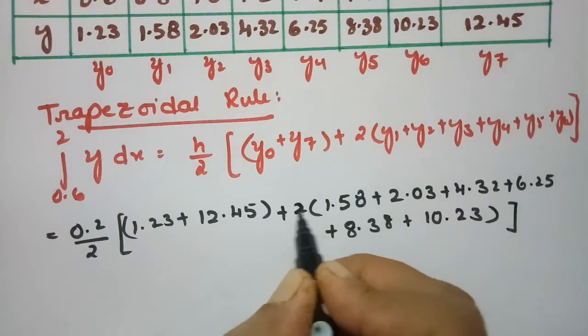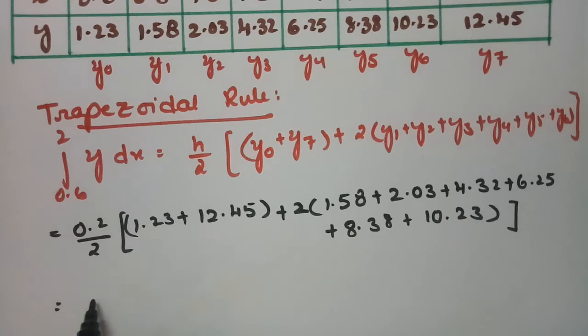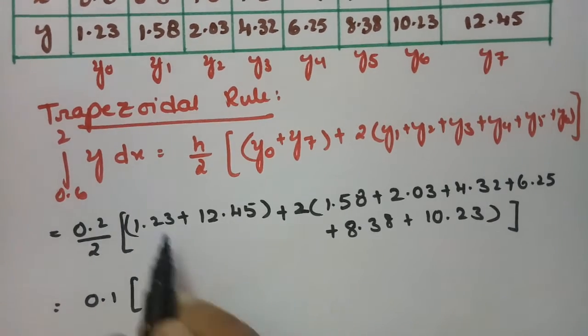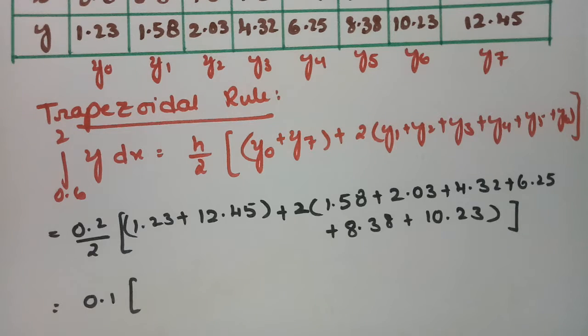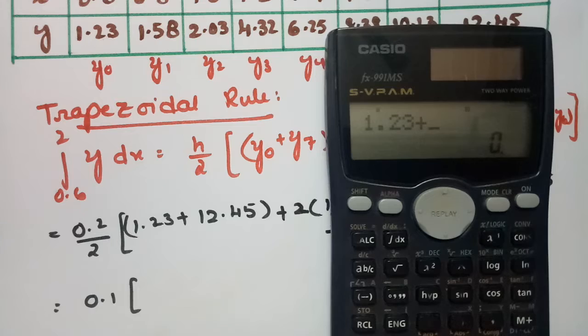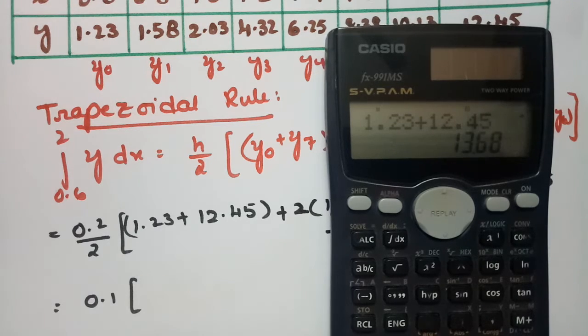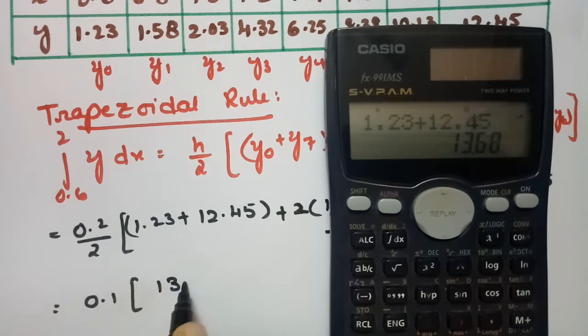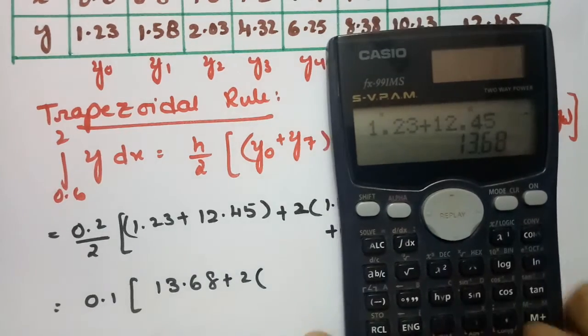Now we calculate all these values. So 0.2 by 2 is 0.1, and if I add 1.23 plus 12.45, the value is 13.68 plus 2 times the remaining values.